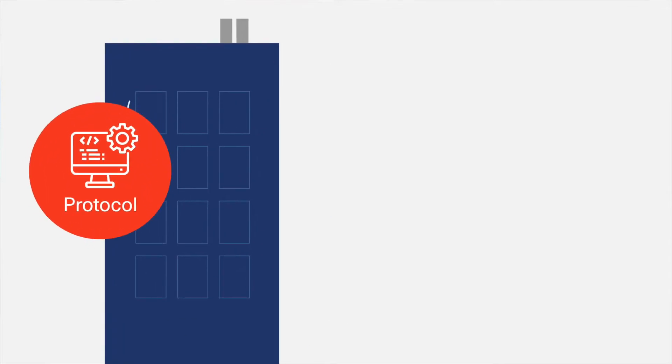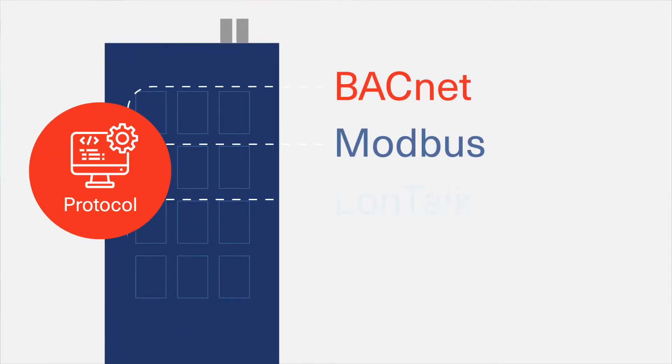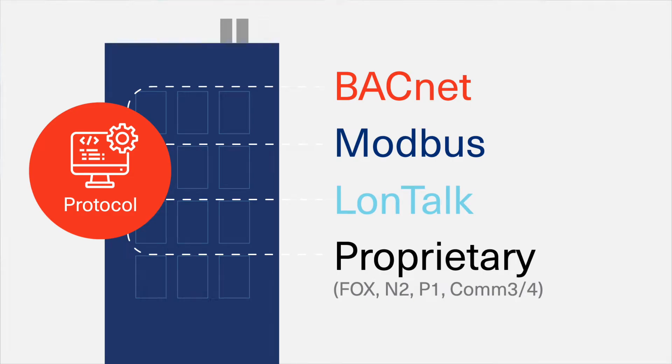Let's take a closer look at a building's language. These are the most common. When we think about where your building will communicate — the medium — we'll look for the best way to transport building data. Essentially, it comes down to one big question: wired or wireless?